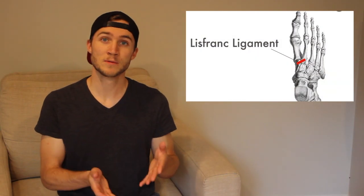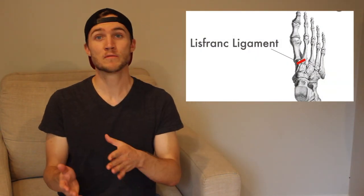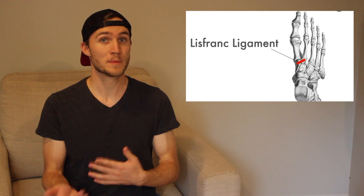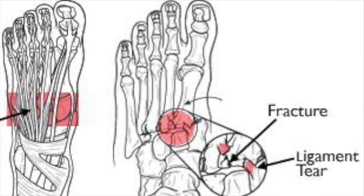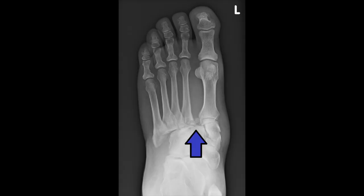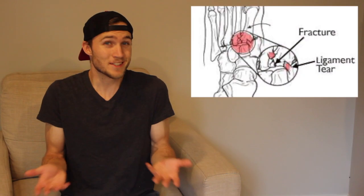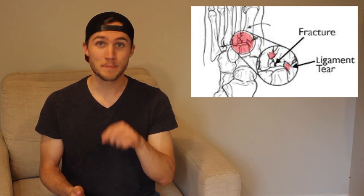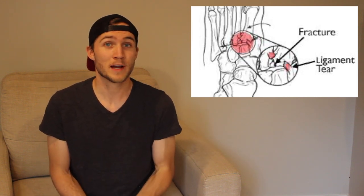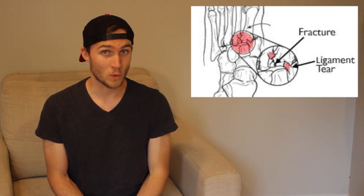Ligaments connect bones to other bones. They keep them from moving further than we want them to within the human body. When Travis ETN injured this part of his foot, the ligament holding these bones together was more than likely damaged. There may also have been a fracture or breaking of one of the bones in this area. Quick and dirty, that's the injury: a tearing of the ligaments in the mid-foot, which may be accompanied by a fracture or breaking of the bones as well.